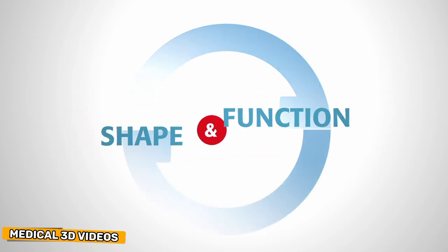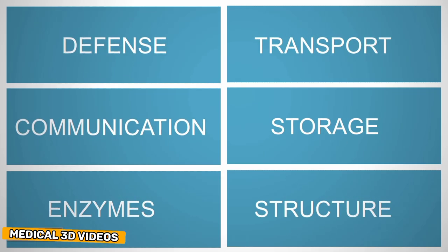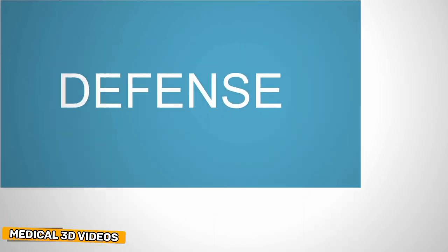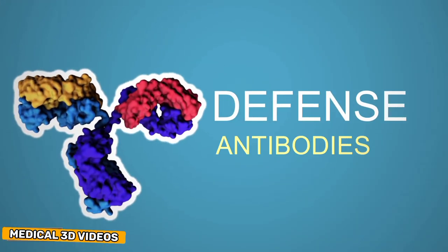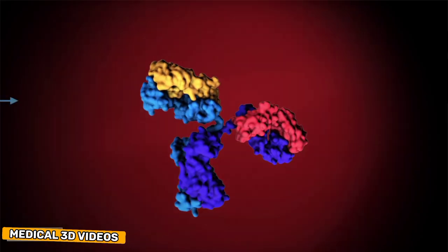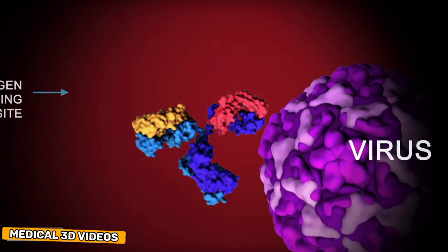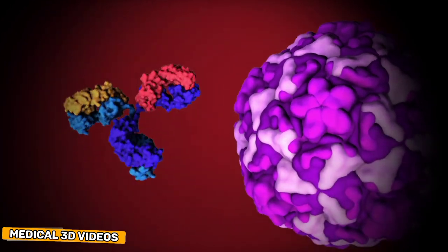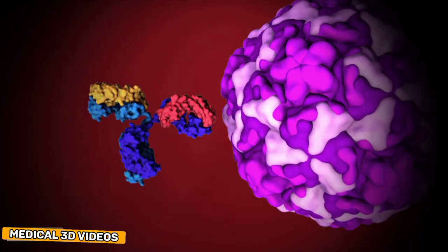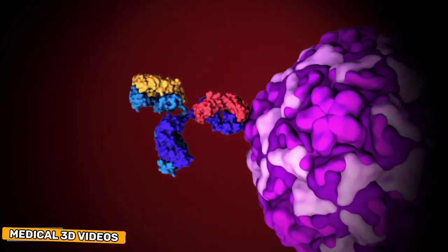The three-dimensional shapes of proteins determine their function. The flexible arms of antibodies protect us from disease by recognizing and binding to pathogens and targeting them for destruction by the immune system.